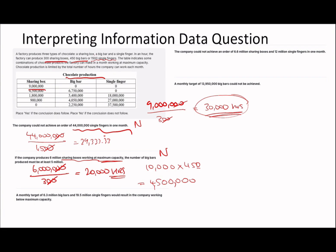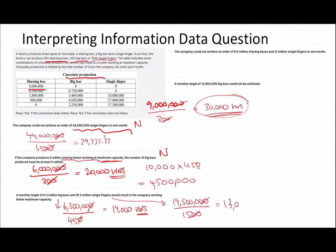Sub-question 3: a monthly target of 6.3 million big bars and 19.5 million single fingers working below maximum capacity. 6,300,000 divided by 450 = 14,000 hours. And 19,500,000 divided by 1,500 = 13,000 hours. Total is 27,000 hours. Yes, that's below maximum capacity since we have 30,000 hours.